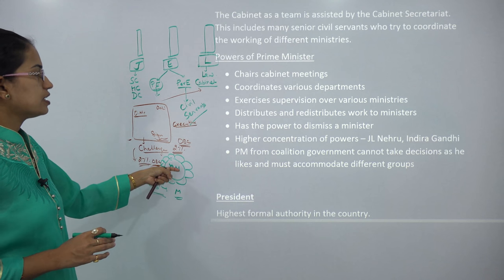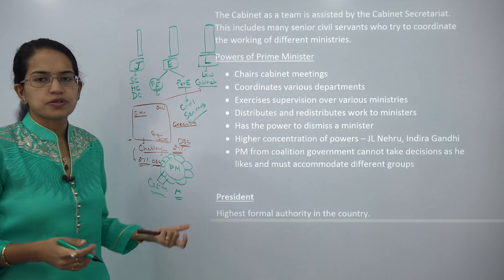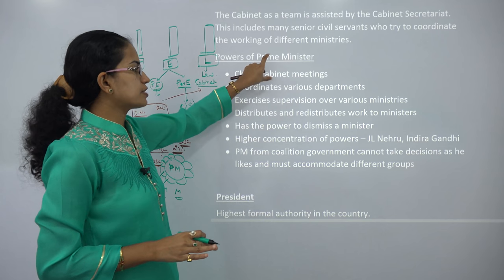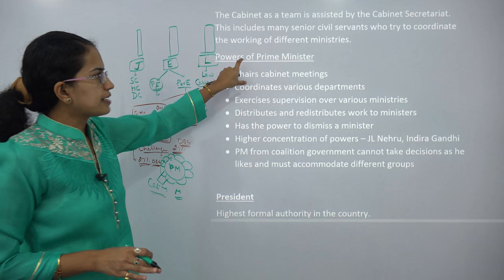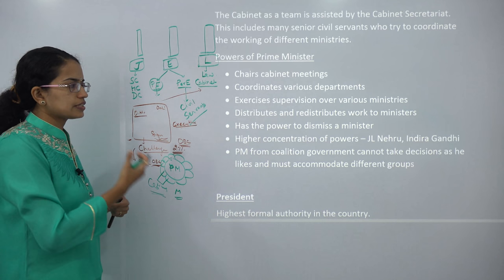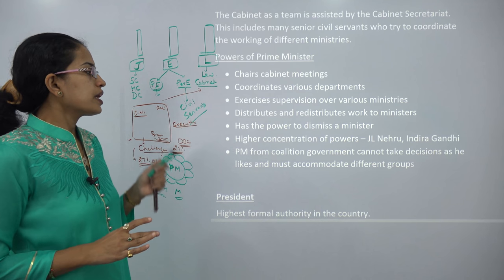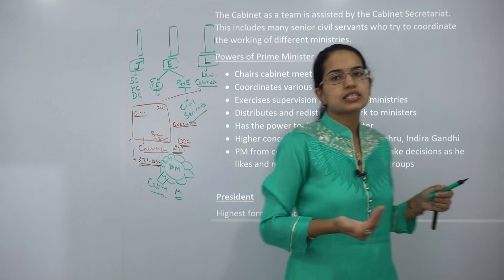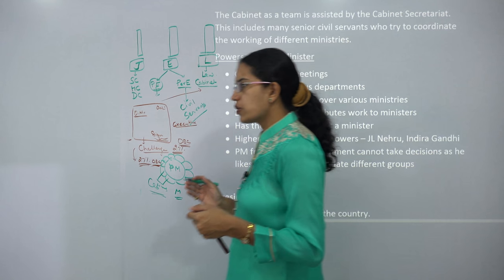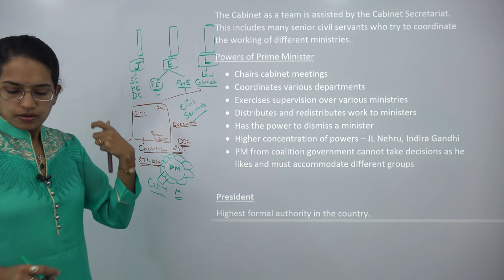The Prime Minister chairs cabinet meetings, coordinates various departments, exercises supervision over ministries, distributes duties, and has the power to dismiss any minister. Sometimes ministers accumulate excessive power — as seen with Jawaharlal Nehru and Indira Gandhi — when people felt democratic excesses occurred. In a coalition government, where two or three parties together come to power, the Prime Minister's say is comparatively less than in a clear majority government.